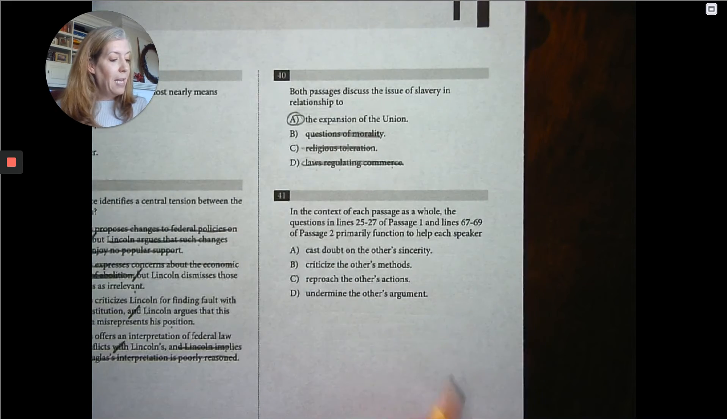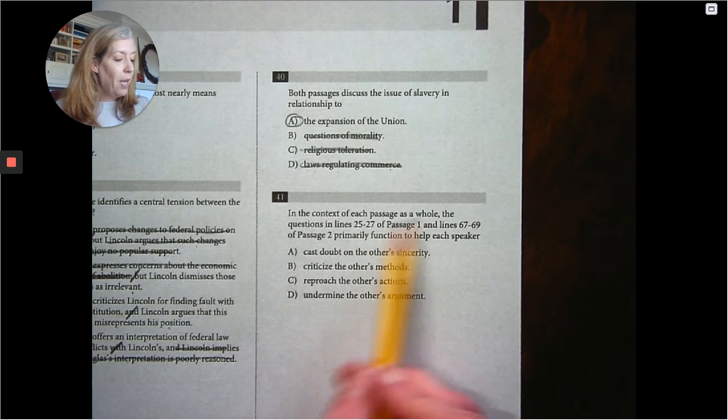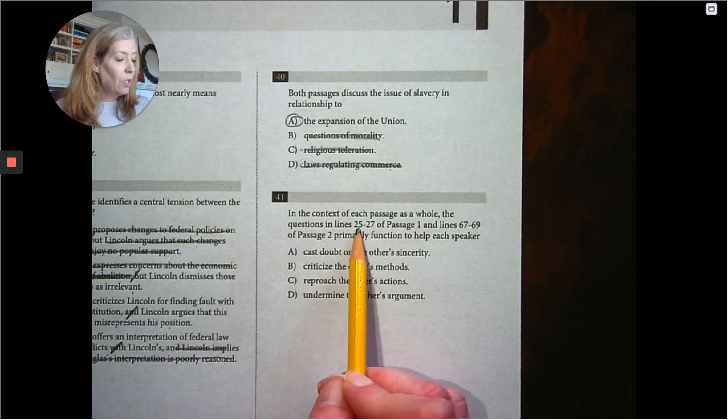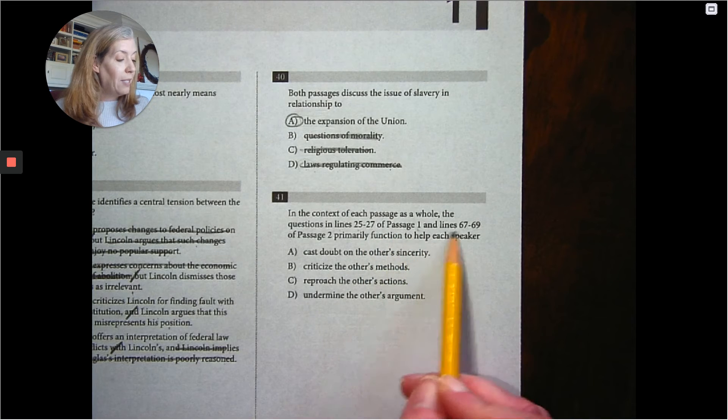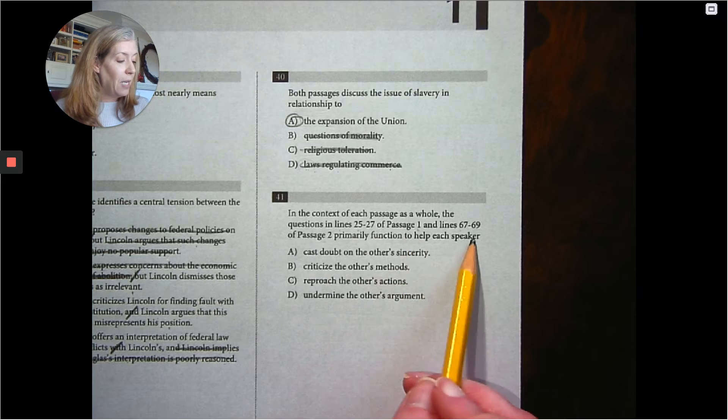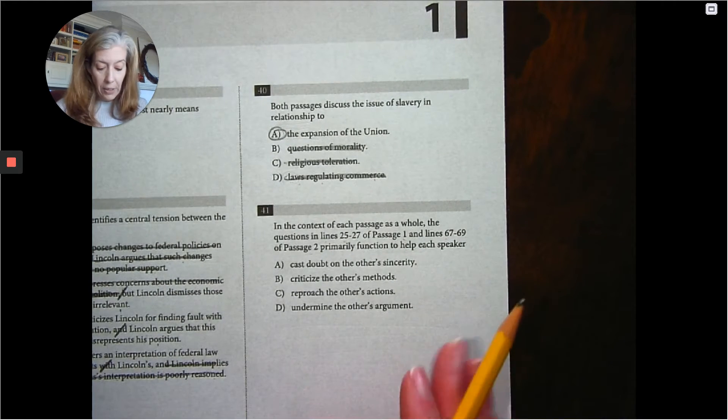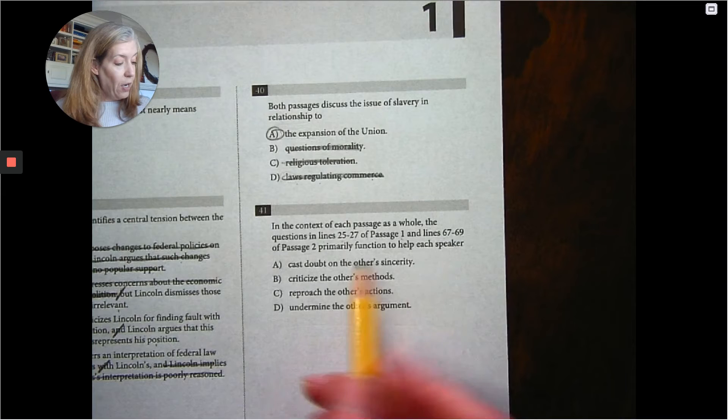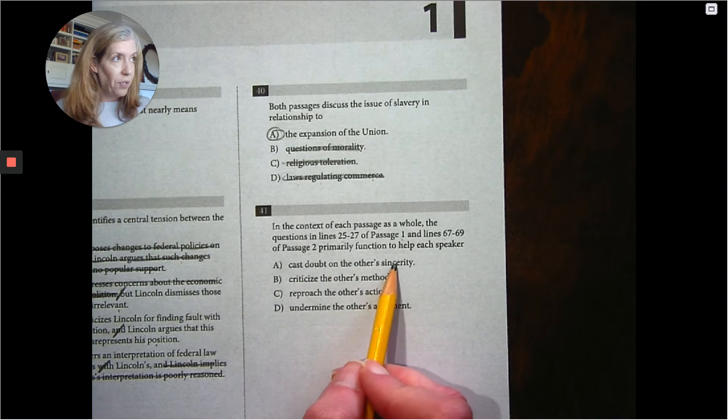And then 41. In the context of each passage as a whole, the questions in line 26 to 27 of passage 1 and lines 67 to 69 of passage 2 primarily function to help each speaker. What are they doing? What are they doing in these ones? Are they casting doubt on the other's sincerity?